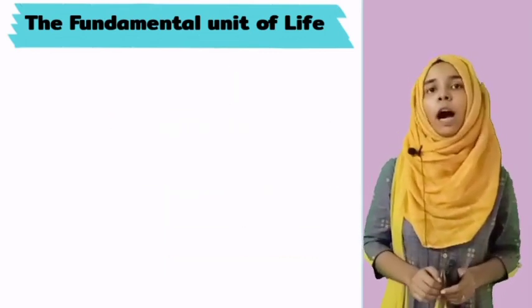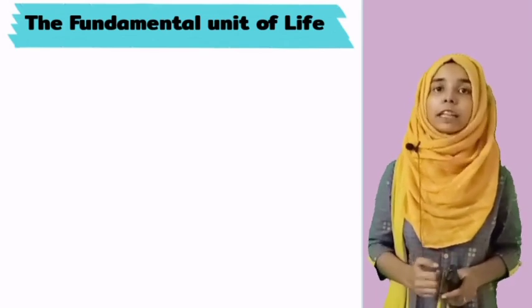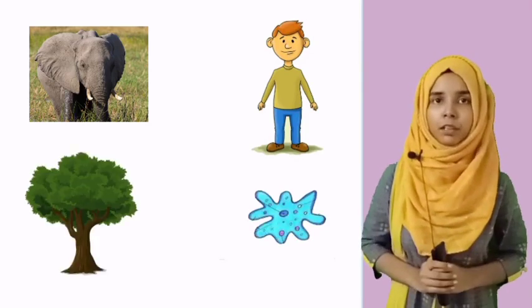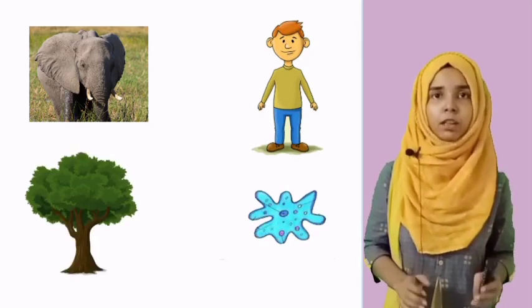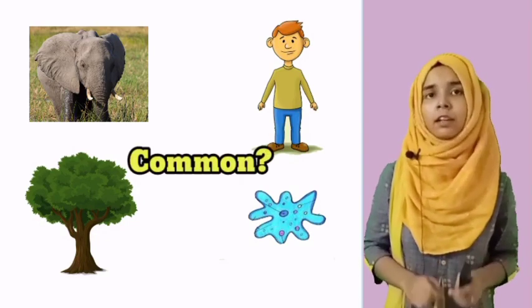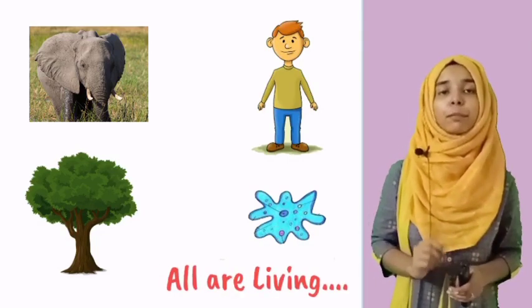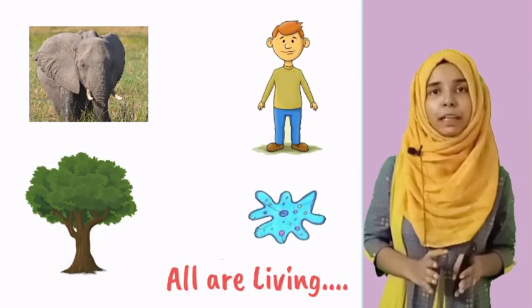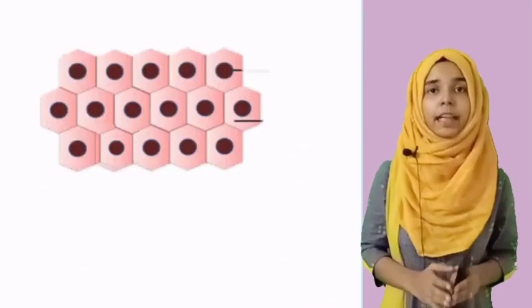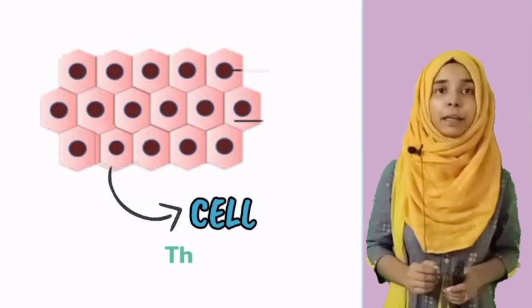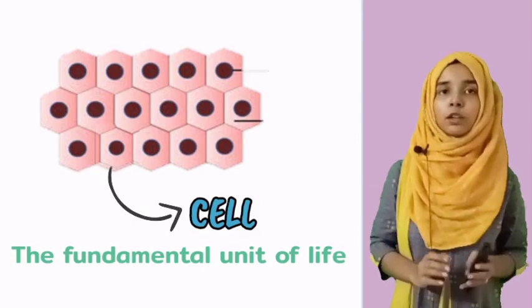So fundamental and unit are now clear. Today we need to talk about the fundamental unit of life. Look at these figures — you can see an elephant, a human being, an amoeba, and a tree. All of these are very diverse, but something is common among them — they are all living. All of them contain life, and all these living beings are made up of a basic unit known as cells.